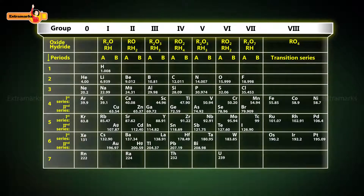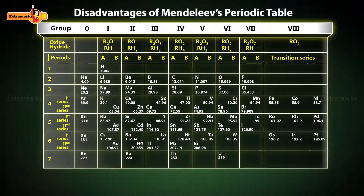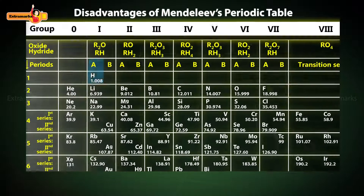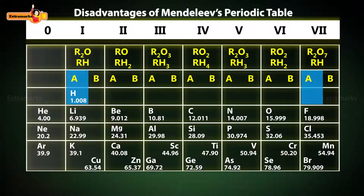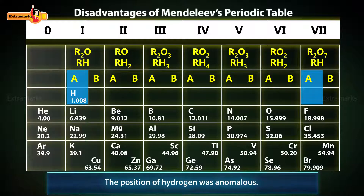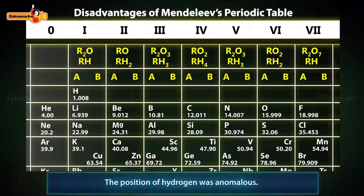In spite of having so many advantages, it had a number of disadvantages too. Hydrogen exhibits the properties of both group 1A and group 7A, but still it was placed in group 1A, so the position of hydrogen was anomalous.